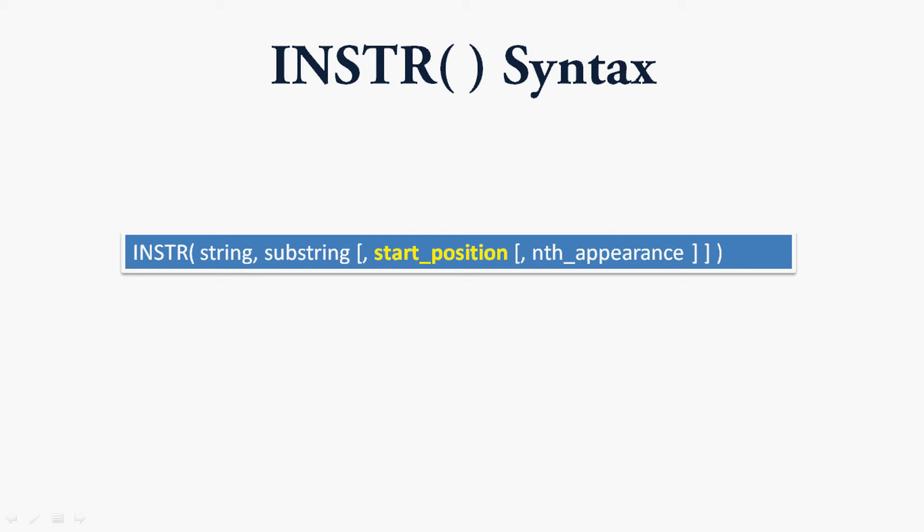The first position in the string is one. If we do not specify the start position, the default value is one. If the start position is negative, the INSTR function counts the start position from the end of the string and searches towards the beginning, returning the position of the given substring. The next optional parameter is nth appearance — if omitted, its default value is also one.